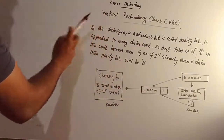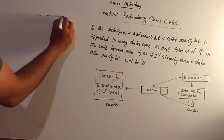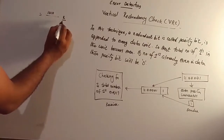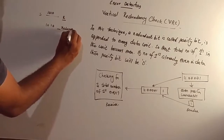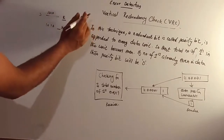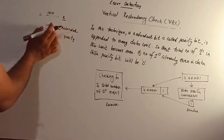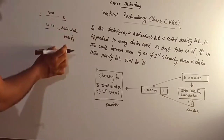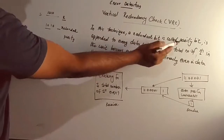I'm going to show you how to do a Vertical Redundancy Check (VRC). In this technique, a redundant bit called a parity bit is appended to every data unit.